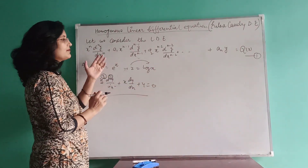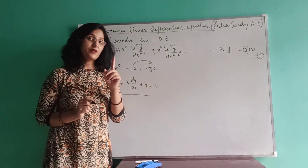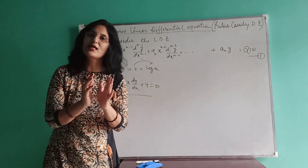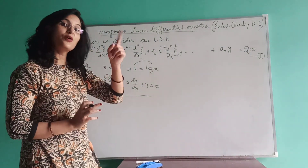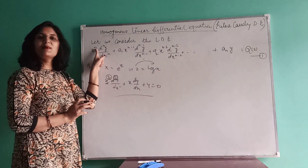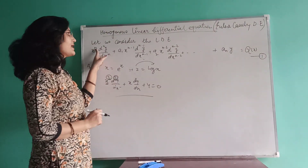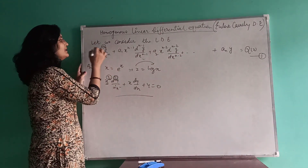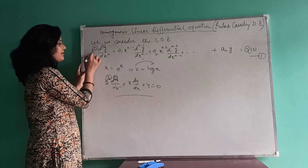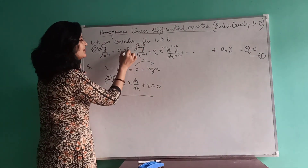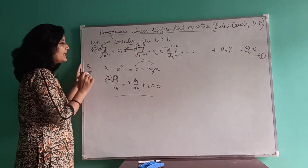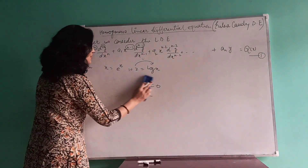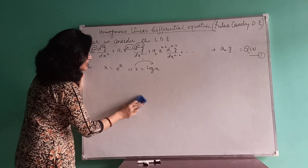So what we need to check: the independent variable is multiplied with the derivative, and the order of the derivative and the power of the independent variable are the same. You can observe in this equation — here we have nth order with power n multiplied with x, and here n minus 1 order with power n minus 1 — and this pattern is followed throughout the whole equation. So this kind of equation is called a homogeneous linear differential equation.